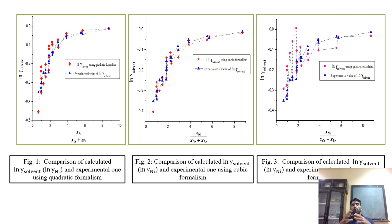However, because there are too many interaction parameters in the quartic formalism — basically 12 interaction parameters — obtaining accurate values for all 12 is very difficult, so there are inaccuracies. That is why the cubic formalism shows much better results than both the quadratic and quartic formalisms.